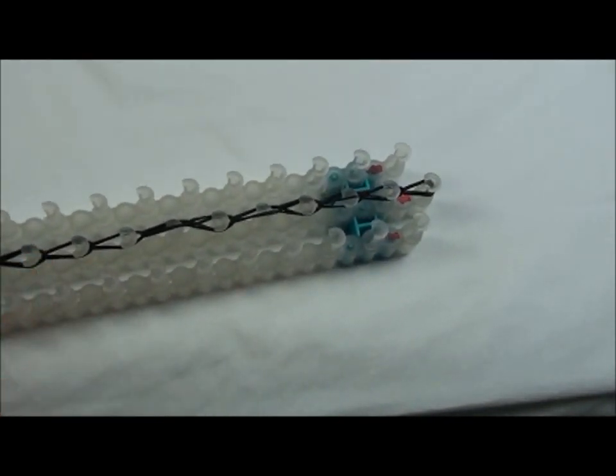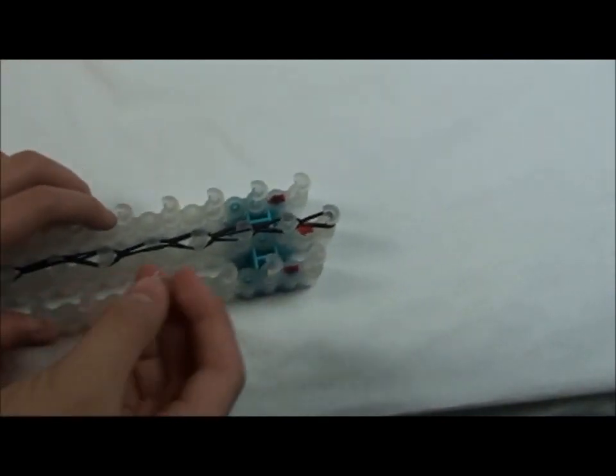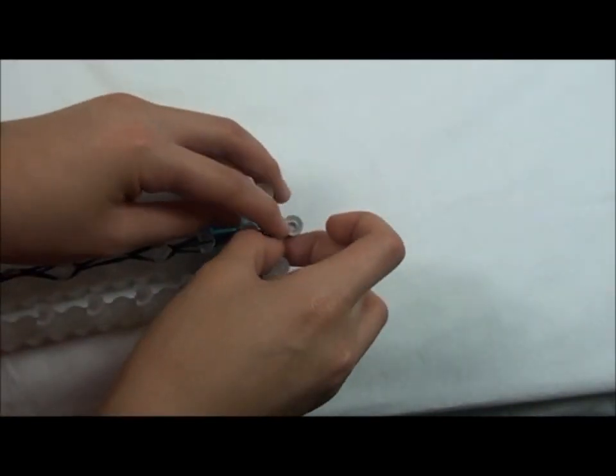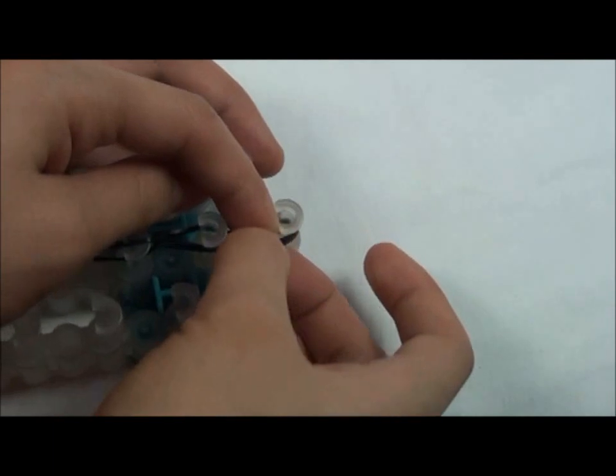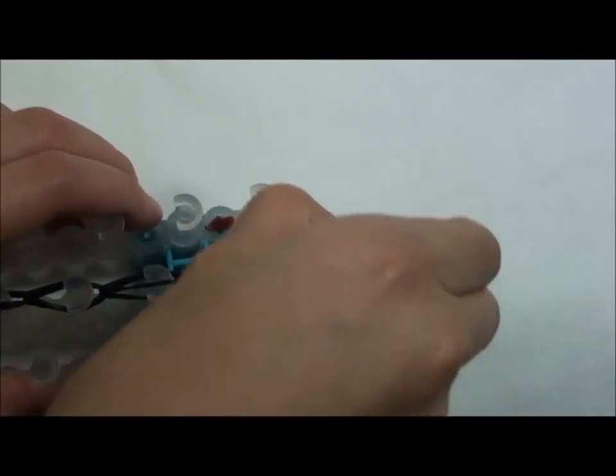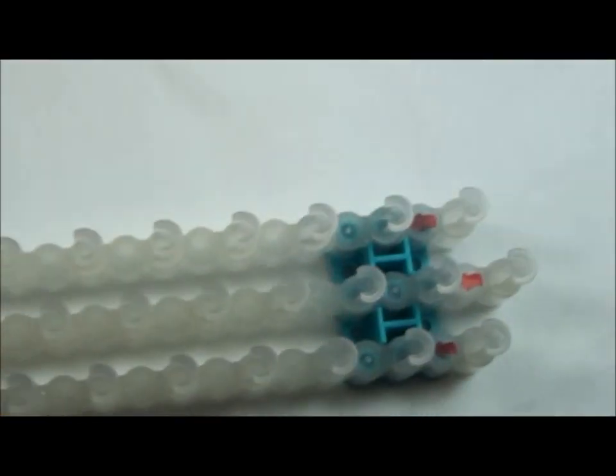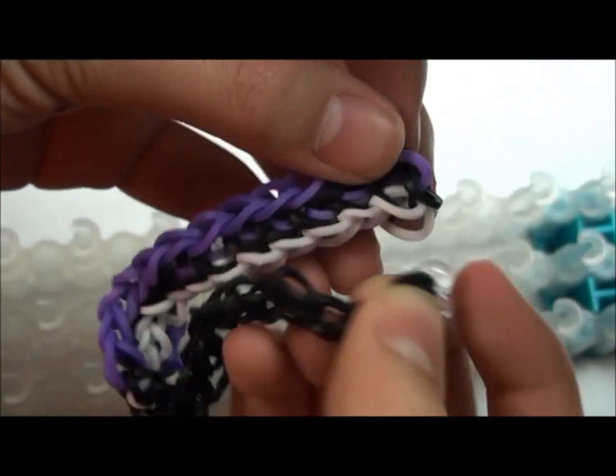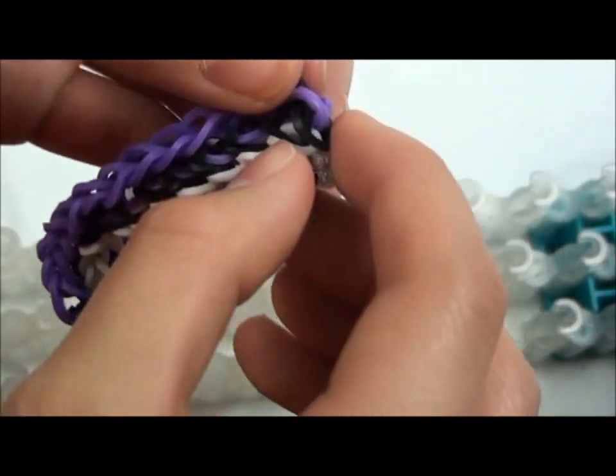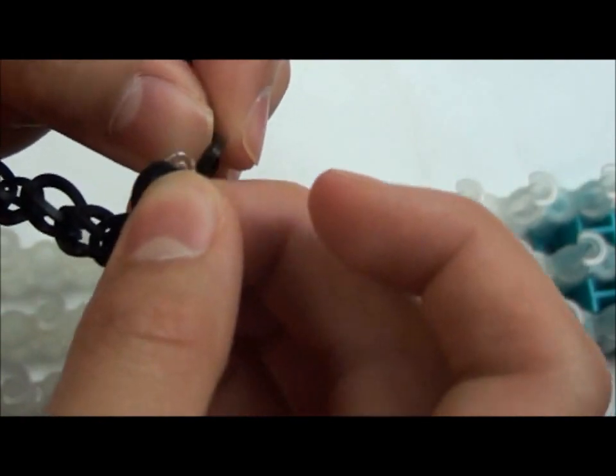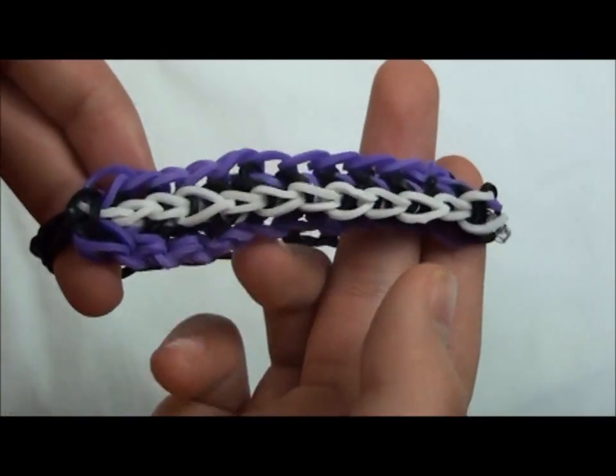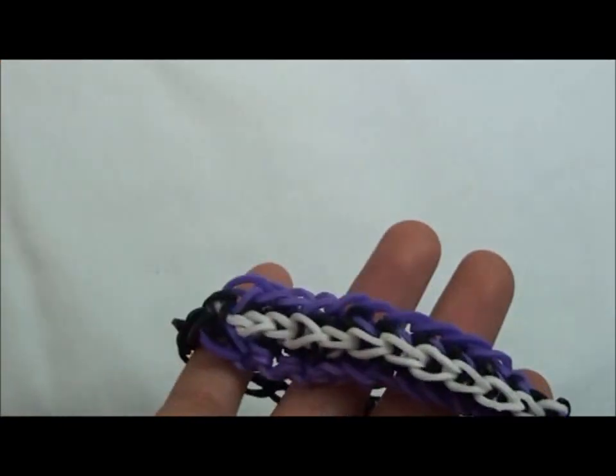Now you can add the C-clip on the last one that you hooked and take it off. Hook the C-clip on the other side. We hope you like it and thank you for watching our video.